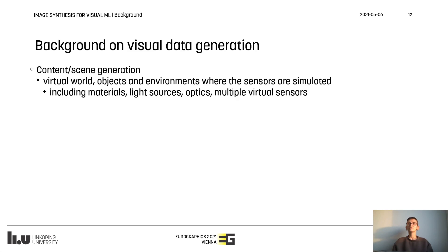To give a short background on visual data generation, we will go through its main components: scene generation and rendering. Scene generation is a process of building up the virtual environment in which the sensors will be simulated. This may range from simplistic objects to fully featured virtual worlds, including geometries, materials, light sources, optics, and various kinds of sensors.